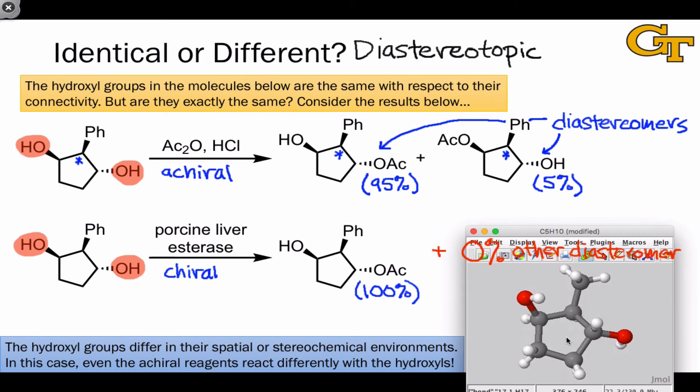Diastereotopic groups have totally different internal distances to other groups within the molecule, and this is easiest to see with the molecular model. In this related compound, I've just replaced the phenyl ring with a methyl group to make things simpler to see. But if we rotate the molecule this way, we can see that this hydroxyl, which is cis to the substituent, the phenyl or methyl, is far closer to it than this hydroxyl is. And that leads to chemical differences, differences in reactivity, regardless of what this molecule is reacting with. This is why groups with a diastereotopic relationship behave differently, whether under achiral or chiral conditions.